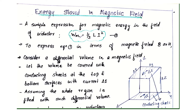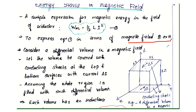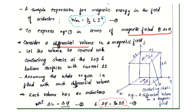Now we will express equation 1 in terms of magnetic field B or H. To do this, we are considering a differential volume in a magnetic field.